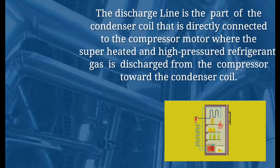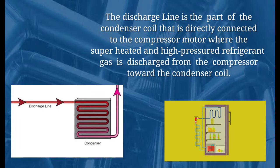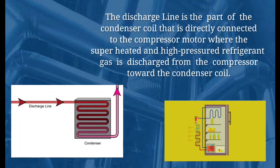The discharge line is part of the condenser coil that is directly connected to the compressor motor, where the superheated and high-pressured refrigerant gas is discharged from the compressor towards the condenser coil.